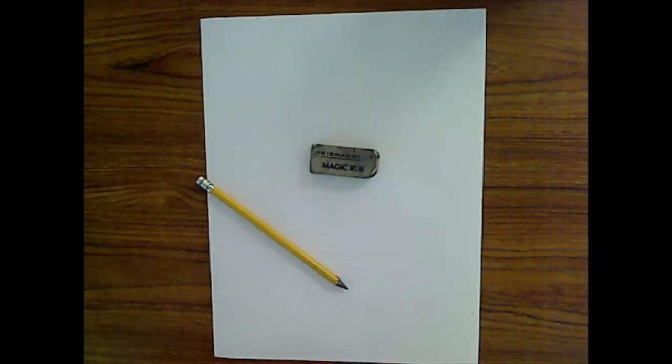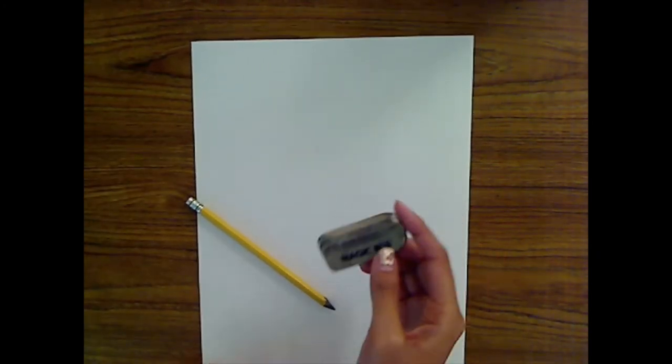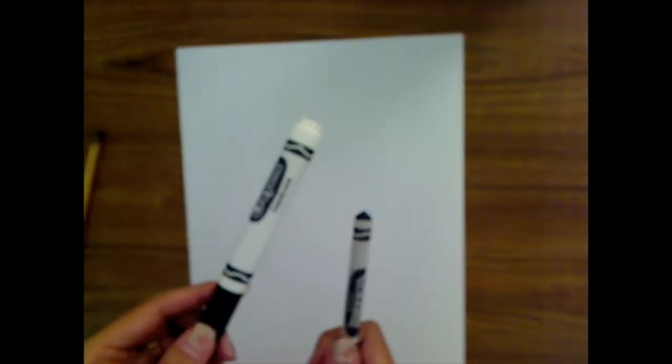Also make sure that you have some sort of drawing utensil. Usually that would be just a pencil and an eraser. Okay, it's always good to have an eraser just in case you make mistakes, then you can erase them. I would not suggest starting out with crayons or markers because you cannot erase those. Once you make those marks, they're there for good. So always start out with pencil.